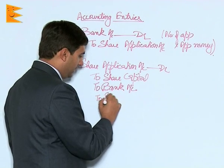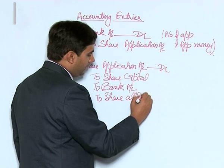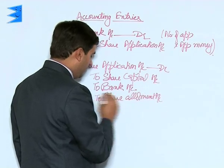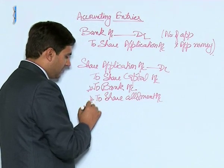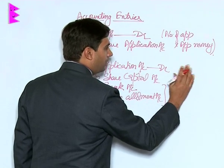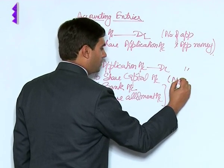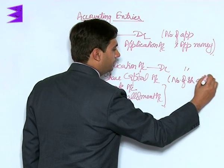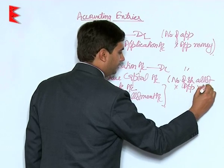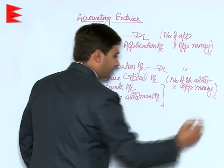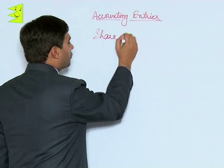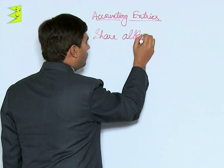Or in case a transfer is to be made to allotment, the entry would be: share allotment account. Remember, these two entries marked with a star are contingent upon what is given in the question. This will show the number of shares allotted into application money. Then we have entries related to allotment — share allotment becomes due, that is share allotment account debited to share capital.